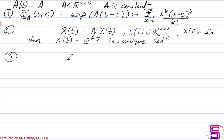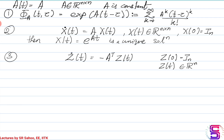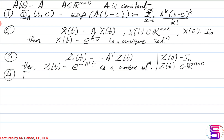This is similar to what we have discussed in the previous lecture on properties of state transition matrices. Similarly, z dot of t equals minus A-transpose times z(t), with z(0) being the identity matrix and z(t) belonging to the n×n real matrix space. Then z(t) = e^(−A^T t) is a unique solution. This is also in line with what we have discussed in the matrix theory.